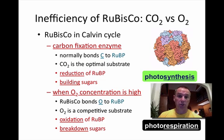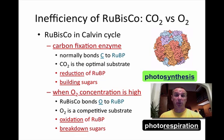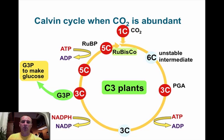Everything goes as it should in photosynthesis. But if you have a high amount of oxygen present, rubisco starts to bind oxygen to RuBP and you actually have a breakdown of sugar — that's called photorespiration. So if you have a lot of oxygen, you have photorespiration; if you have a lot of carbon dioxide, you have photosynthesis, which is what we're shooting for. When carbon dioxide is present, the cycle goes just as we've seen in the Calvin cycle — G3Ps are made, glucose is made, everything is good. This is called a C3 plant.